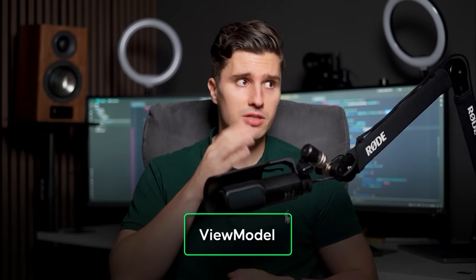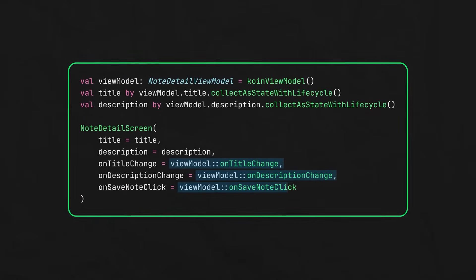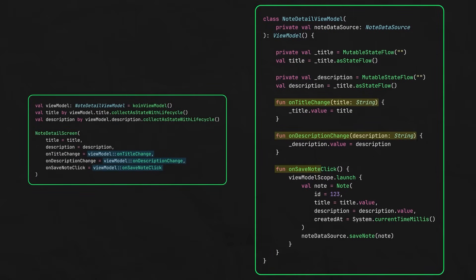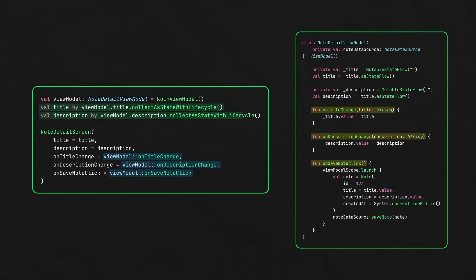Coming to the last part of your architecture: one view model per screen. A view model is nothing else than the middleman between your UI and your data layer. The view model receives events from the UI when something happens — when the user clicks a button or changes text in a text field. The view model also holds your UI state; rather than putting that in remember blocks in your UI, you put it in the view model instead. When the view model receives UI events, for example if the user typed something in a text field, you also update that text state in the view model.